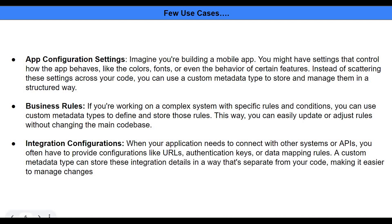Another use case: when your org is sending data to multiple downstream systems — whenever an account is created, a product is listed, or an order is placed — you can manage all the system details using custom metadata. Tomorrow, when there is a change in the configuration of an external system, you can handle it outside of the code. There are plenty of use cases; these are just a few for quick reference.